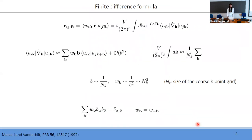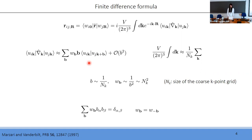In practice, one uses the reciprocal-space formulation of the position operator. Since the Bloch wave factors are only known on a finite k-point grid, one needs to use a finite difference expression. The error of this expression scales as b squared, where b is the distance between neighboring k-points, so it is inversely proportional to the size of the k-point grid. One can add arbitrary terms of order b squared or higher to the right-hand side and still have a valid finite difference formula, converging to the same exact value in the limit of an infinitely dense grid — but the rate of convergence differs.